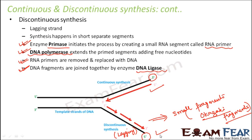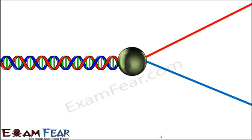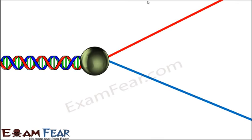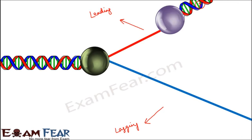Let us look at the animation for better understanding. Starting from the beginning: this is the parental DNA. Enzyme helicase comes into picture and divides the parental DNA into two strands. One side becomes the leading strand where continuous synthesis takes place, and the other side becomes the lagging strand where discontinuous synthesis takes place. On the leading strand, since there is a free 3' hydroxyl end, DNA polymerase can directly act on it, continuously adding free nucleotides to form a new copy of DNA.